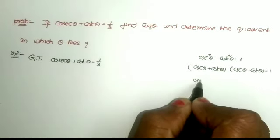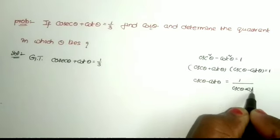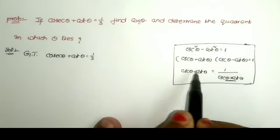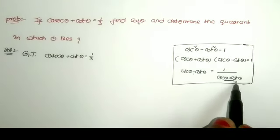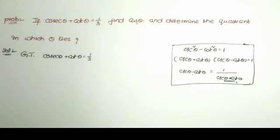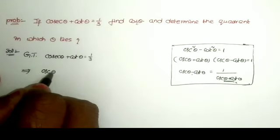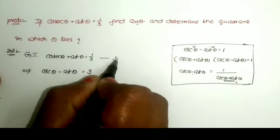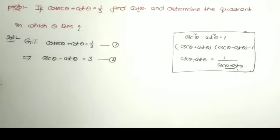From this, the value of cosecant theta minus cot theta equals 1 divided by (cosecant theta plus cot theta). So if you know the value of cosecant theta plus cot theta, then cosecant theta minus cot theta is simply its reciprocal. Directly taking the second value: cosecant theta minus cot theta equals the reciprocal of 1/3, which is equal to 3. This is equation 2.